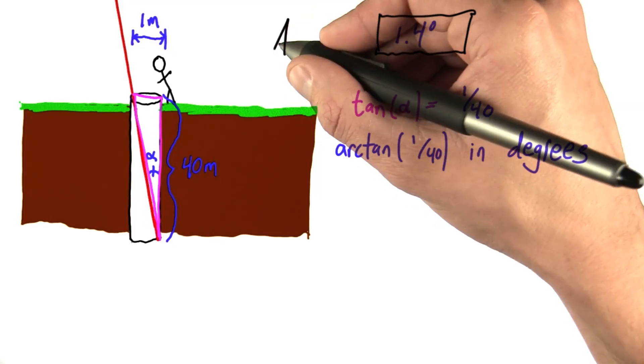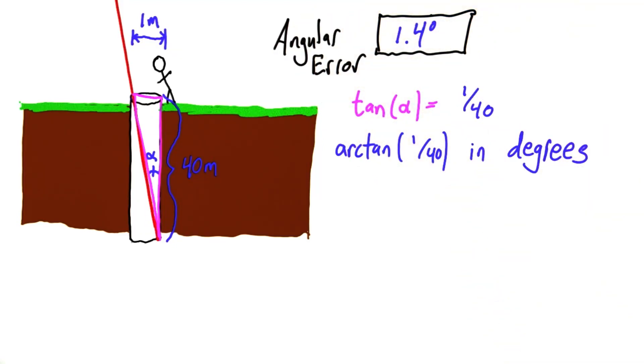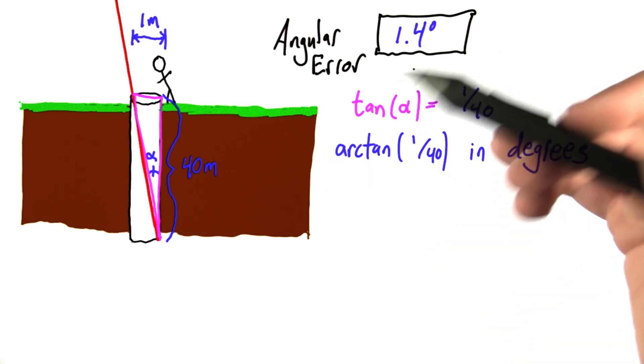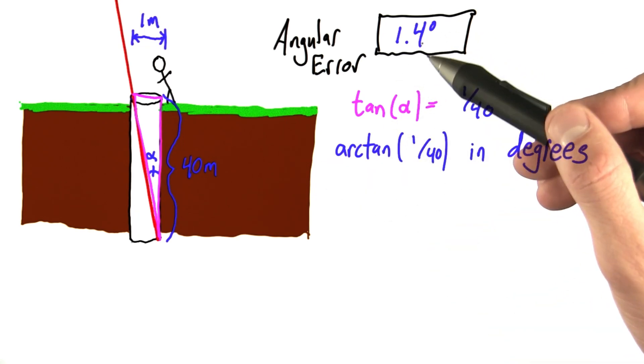We need to go from this angular error to an error in circumference, which means we have to propagate this error through our calculation.